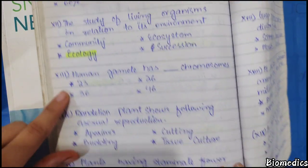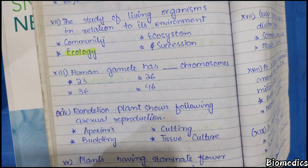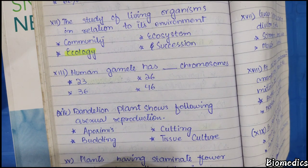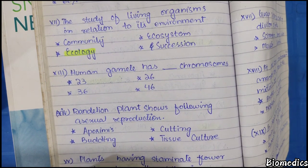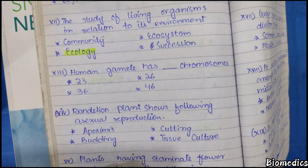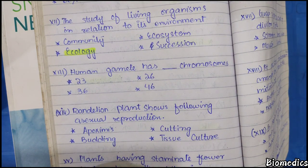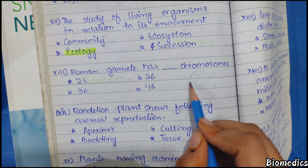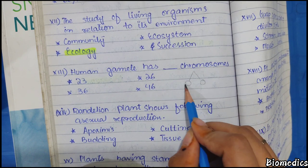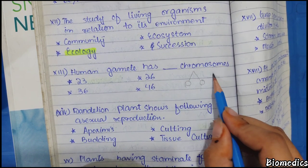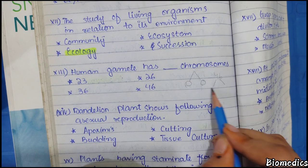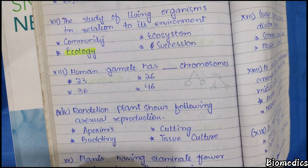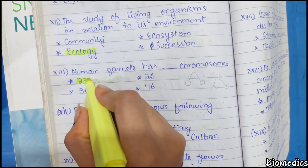How many chromosomes do human gametes have? Gametes are formed through meiosis, which halves the chromosome number. Normally humans have 46 chromosomes, so after meiosis the gametes have 23 chromosomes.